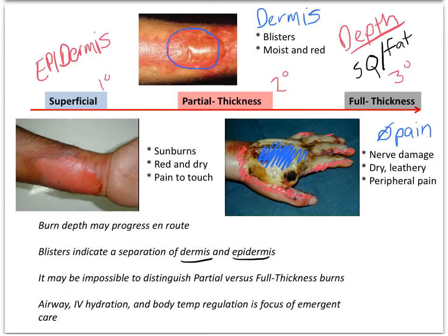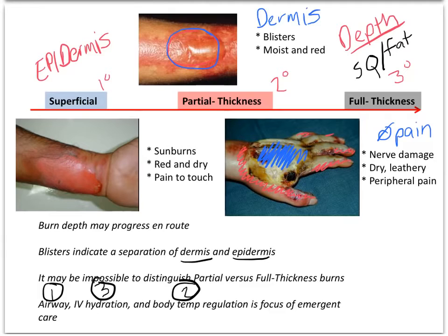I want to put body temperature regulation as number two and IV hydration as number three — so: one, airway; two, body temperature regulation; three, IV hydration. Because these patients needing critical care for their burn injuries have lost the ability to maintain their body temperature, since their epidermis or dermis has been completely destroyed — and that was one of the major barriers from the external environment.